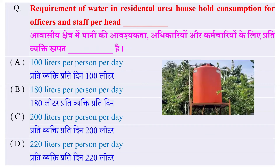Requirement of water in essential areas — household consumption for officers and staff per head. आवासीय क्षेत्र में पानी की आवश्यकता — अधिकारियों और कर्मचारियों के लिए प्रति व्यक्ति खपत कितने लीटर है? Options: 100 लीटर per day, 180 लीटर per day, 200 लीटर per day, या 220 लीटर per day।